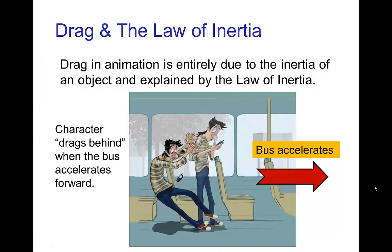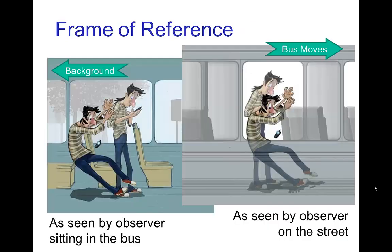Drag in animation is entirely due to inertia — it's explained by the law of inertia. Here's an example: a character standing on a bus. The bus accelerates forward and the character seems to drag behind. In reality, as seen from someone standing on the street, the character is actually remaining in place by inertia, and simply the bus is moving out from under them. From the point of view of someone sitting in the bus, they look like they're falling behind.